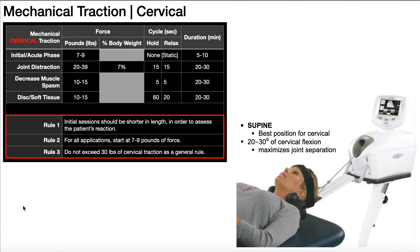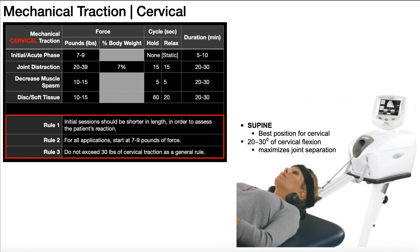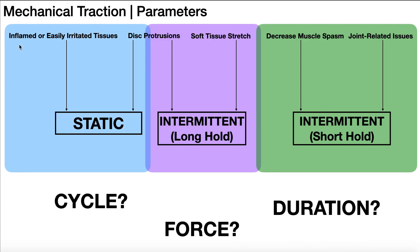Let's first take a look at cervical mechanical traction. Here's a table that goes over the various parameters for different indications. If we have an injury to the cervical spine in the initial or acute phase — remembering that it would have to be after 72 hours post-inflammation before applying traction — we're going to use the lowest amount of force: anywhere between seven to nine pounds. In this case we're not using intermittent traction; this is a static hold, and the duration is going to be the shortest — anywhere between five and ten minutes.